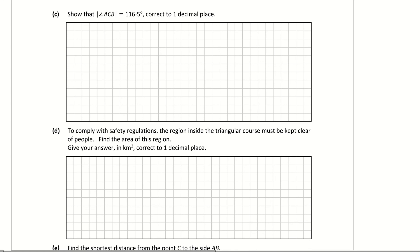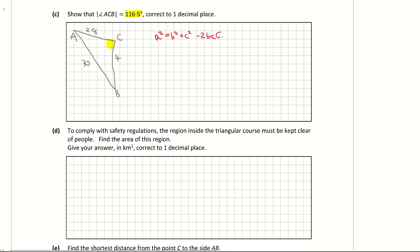Looking at part c: show that angle ACB equals 116.5 degrees, to one decimal place. I'll sketch the triangle with vertices C, A, and B. Filling in the known sides: CA = 28 km, CB = 4 km, and AB = 30 km. I'll use the cosine rule to find the angle at C.